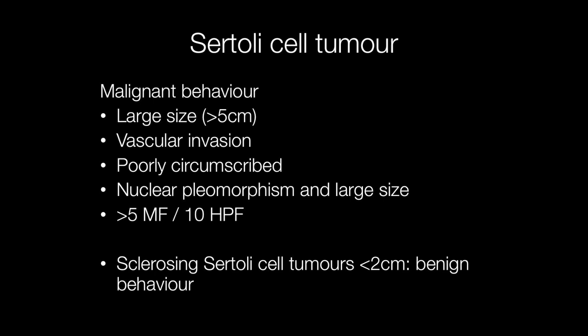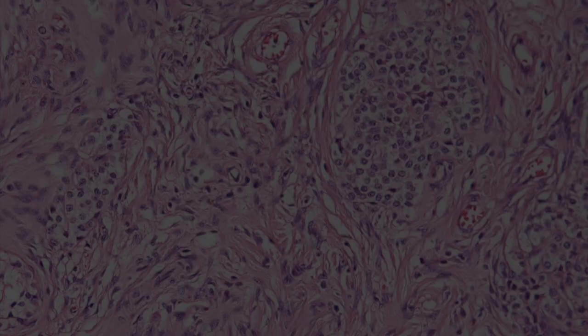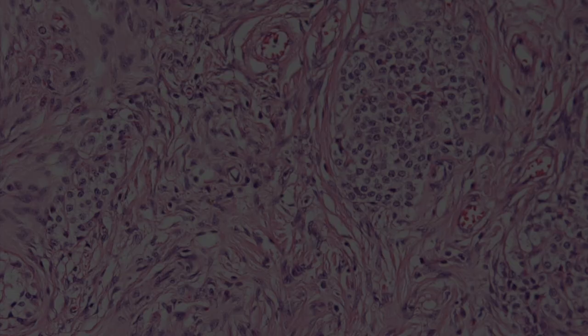Another feature sometimes associated with malignant behaviour is the presence of gynaecomastia. It is said that sclerosing Sertoli cell tumours are associated with more benign behaviour, especially those less than 2 centimetres across. This is an example of a sclerosing Sertoli cell tumour with an abundant fibrous stroma.